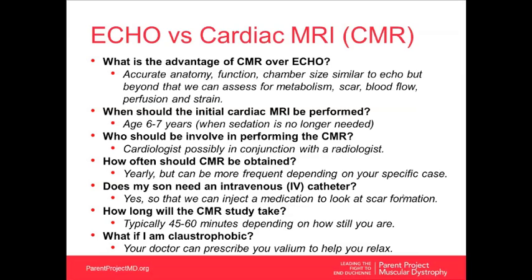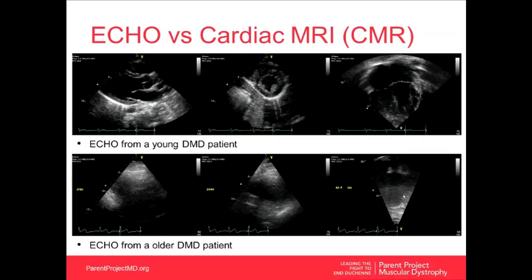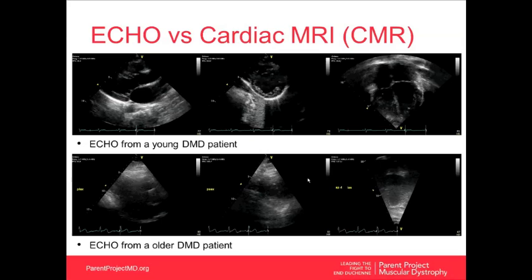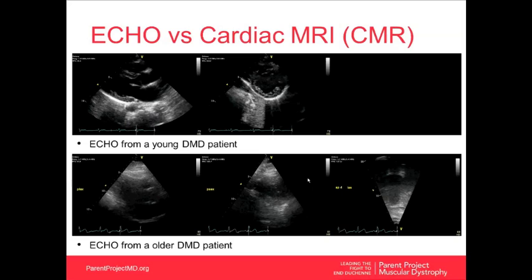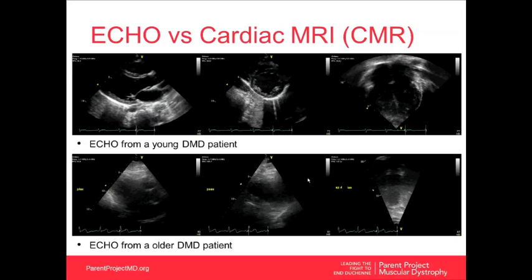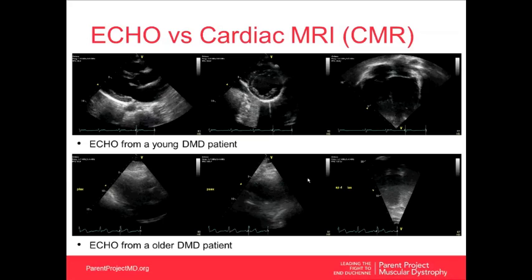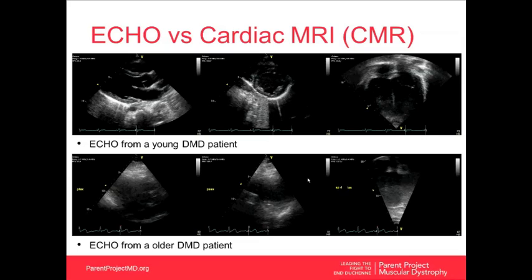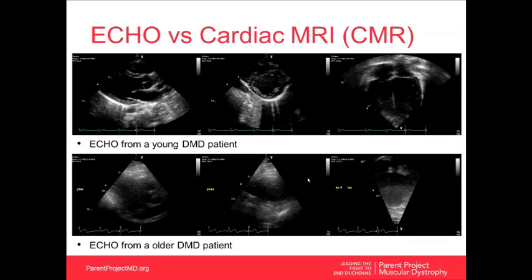What if your son is claustrophobic? Valium can be prescribed to help him relax, and that has served very well for most patients. Looking at the images, an echocardiogram of a young Duchenne patient can produce very beautiful images with normal-appearing heart function. Unfortunately, as the boys get older due to scoliosis and other factors, it becomes much harder for ultrasound to penetrate the chest wall, producing poor images that make it difficult to assess exactly what's going on — whether they need more treatment or whether treatment is effective.